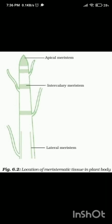The second type is intercalary meristem. It is found between regions of mature tissues in stems and at the base of leaves, such as in grasses. Intercalary meristem is responsible for the increase in width or diameter of stems and branches. It allows for the regeneration of damaged parts of the plant and contributes to its ability to tolerate grazing or cutting. In grasses, it enables rapid regrowth after being grazed by animals.